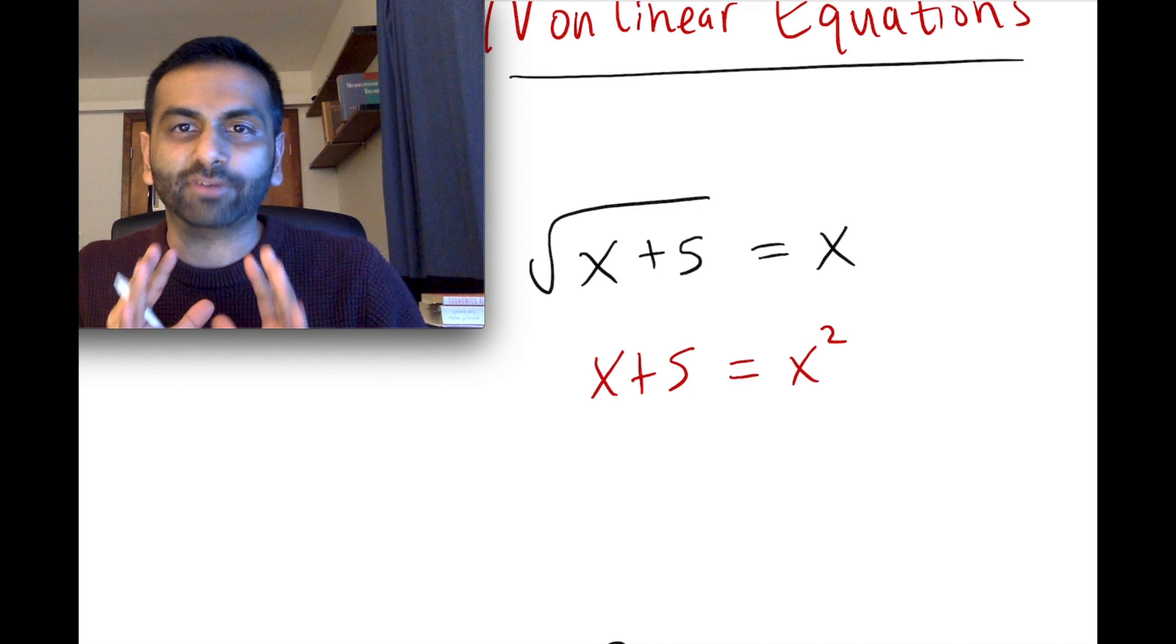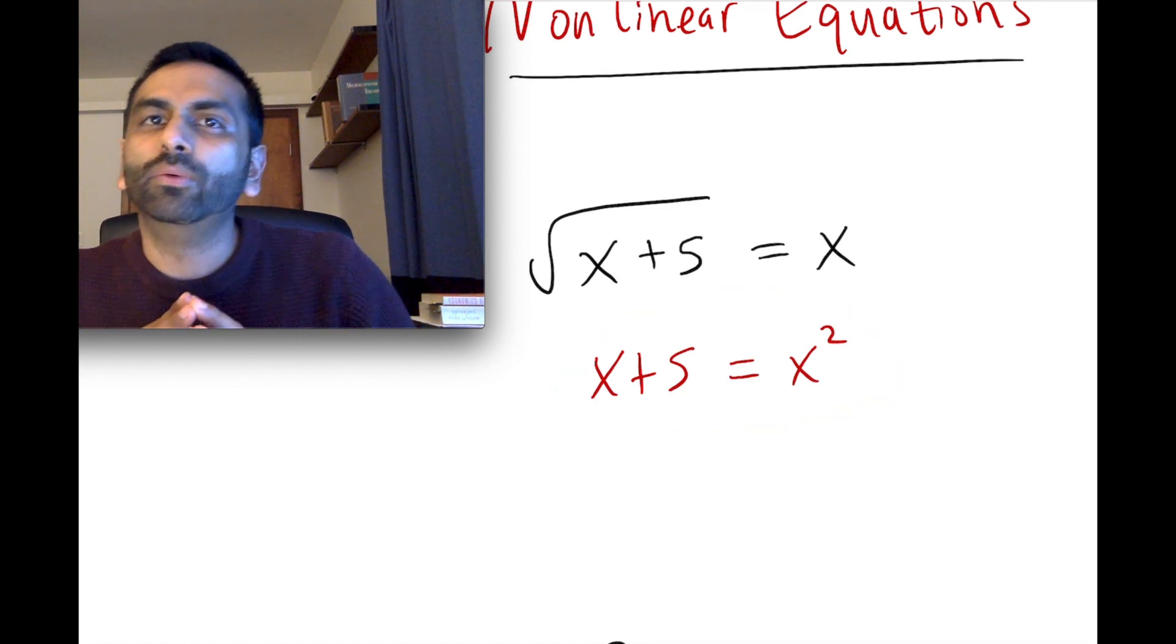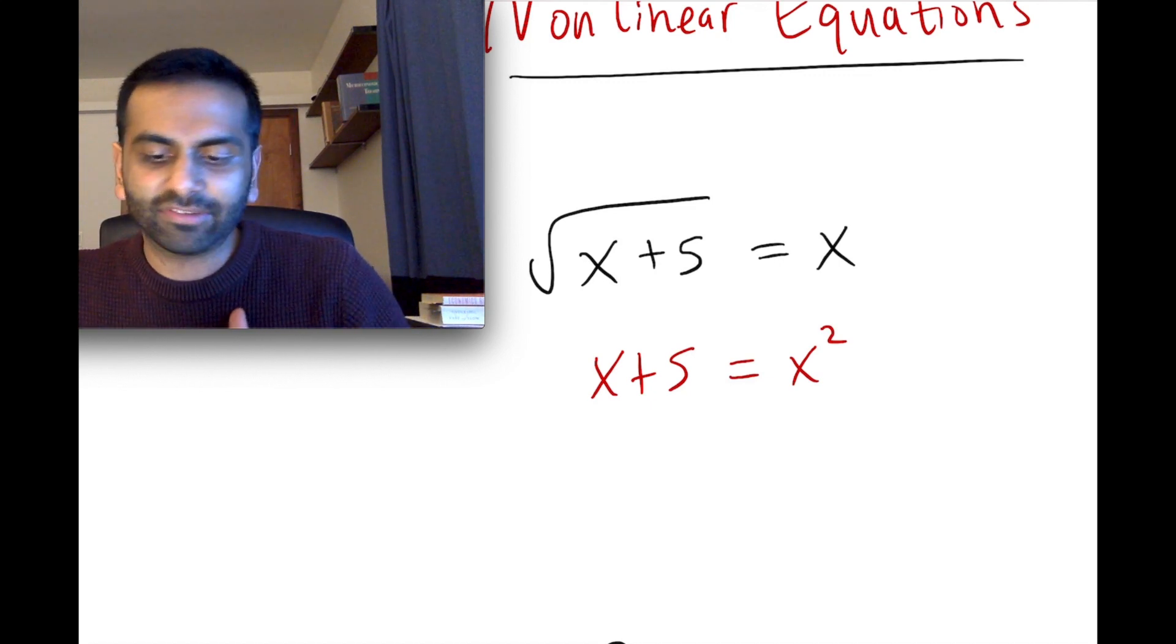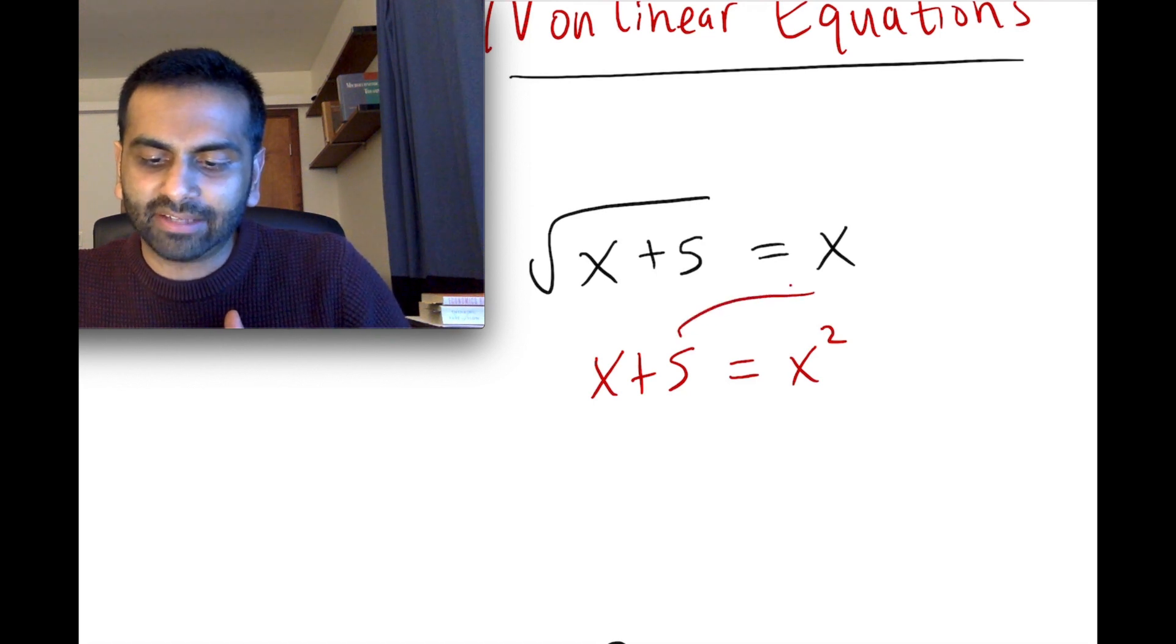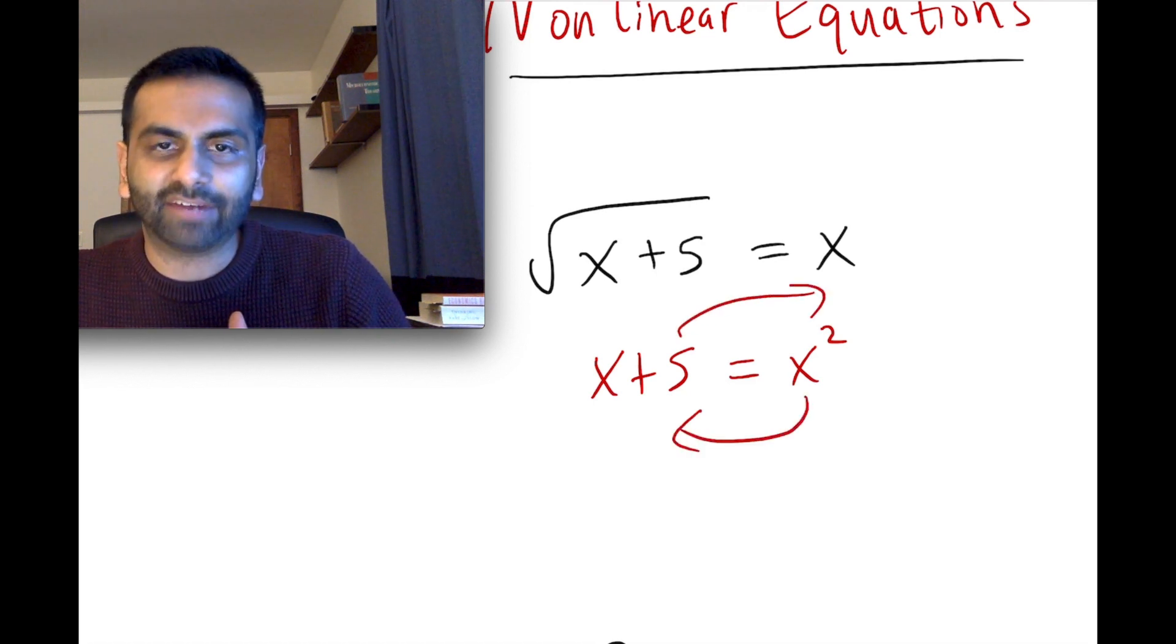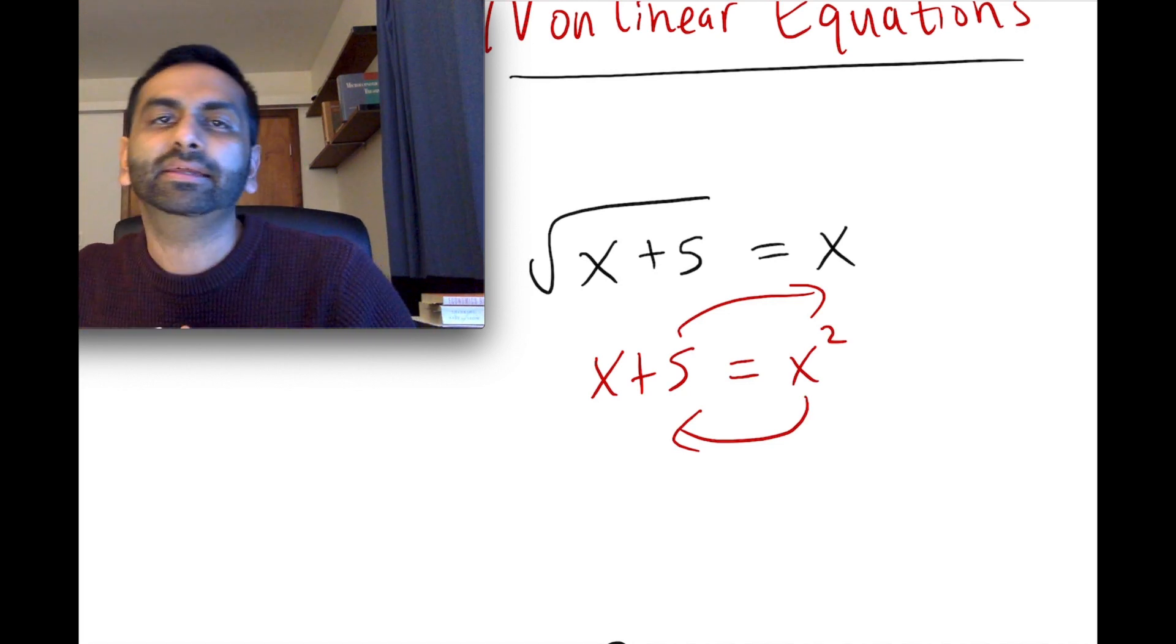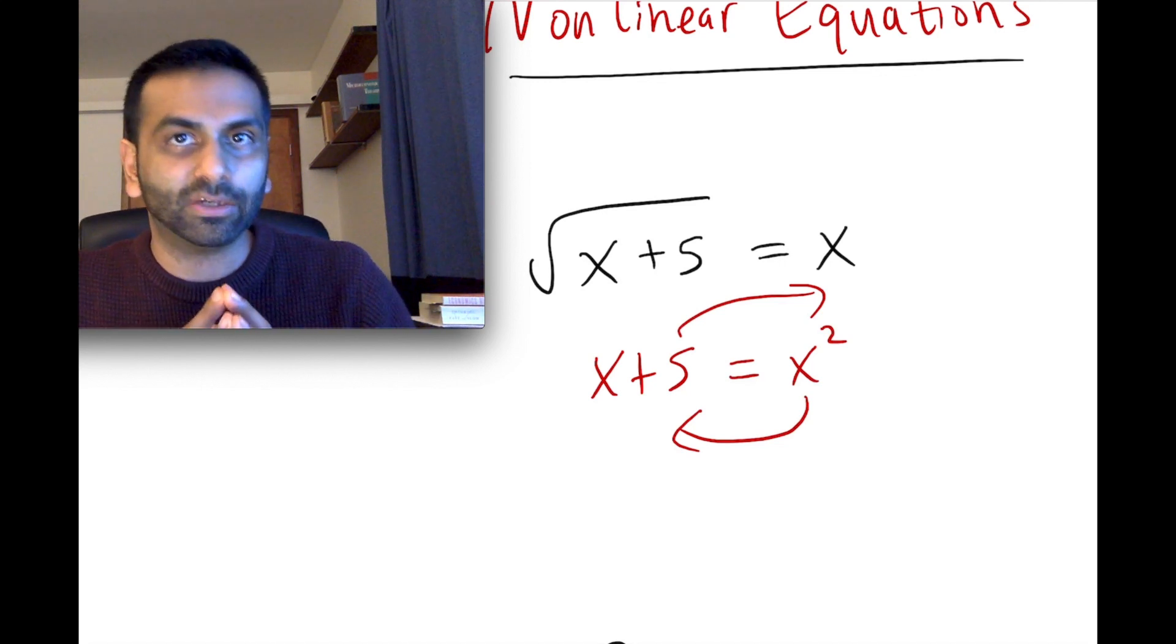So now you have this. Whenever you have a quadratic equation like this, unlike a linear equation where you're trying to basically get x by itself on one side, your instinct might be to bring the x to the other side and bring the x squared here. That way all the x's are in one term and the numbers are in the other term. But that's not what you do with quadratic equations.